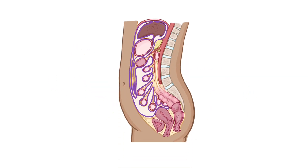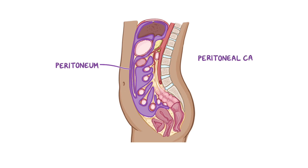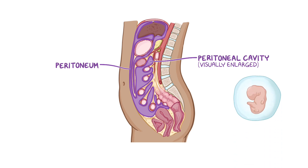At first glance, the peritoneum and peritoneal cavity seem pretty simple, but some aspects like the peritoneal ligaments can be a bit confusing. In order to understand them, we need to go way back to their embryological formation.